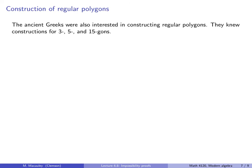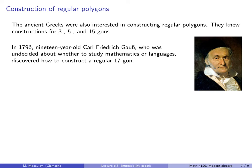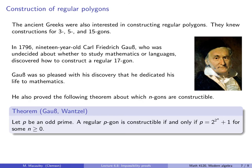The ancient Greeks were also interested in constructing regular polygons using just a ruler and a compass. They knew constructions for 3, 5, and 15 gons. In 1796, 19-year-old Carl Friedrich Gauss, who was undecided about whether to study mathematics or languages, discovered how to construct a regular 17-gon. Gauss was so pleased with his discovery that he dedicated his life to mathematics. Gauss is known for many things in math and physics, but he also proved the following theorem about which n-gons are constructible.